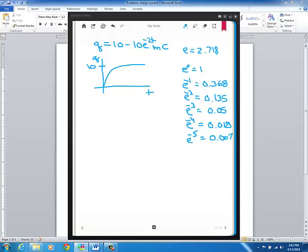And then as t gets bigger, e, the e term here is getting smaller. So 10 times that e term that's getting smaller will also get smaller. And eventually,